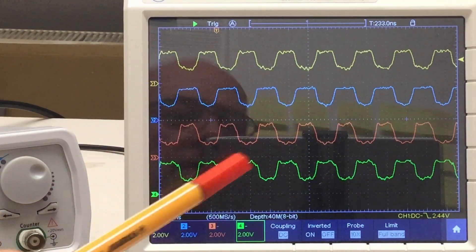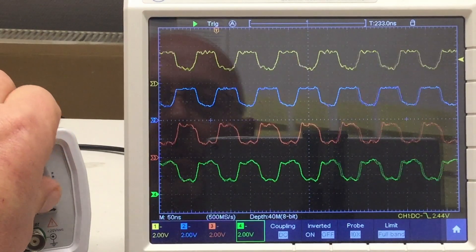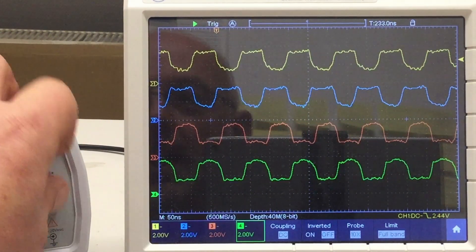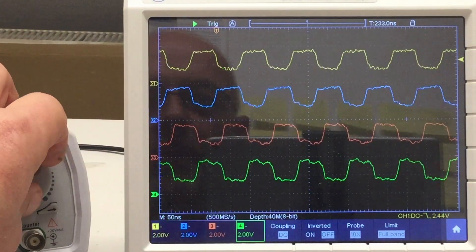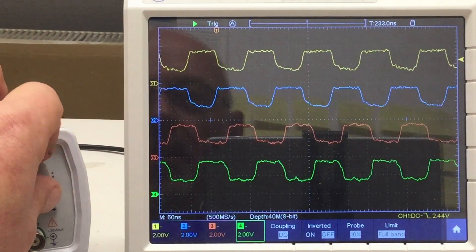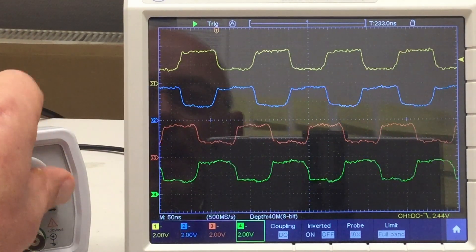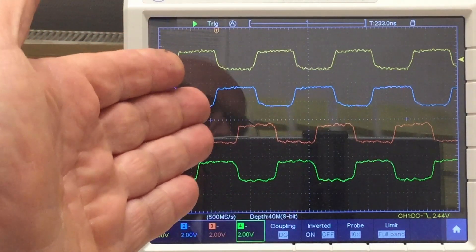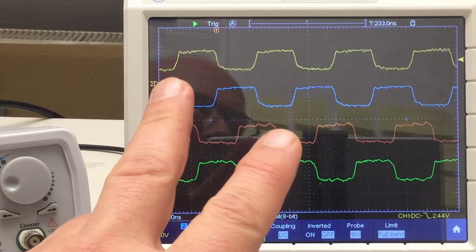But now, let's sweep through the frequencies. 10 MHz going down, down, 9 MHz, down, 8 MHz, a bit of reflection, but nothing to write home about. 7 MHz looks nice. 6 MHz still looking nice. 5 MHz, perfect. So, problem solved through a second termination resistor.